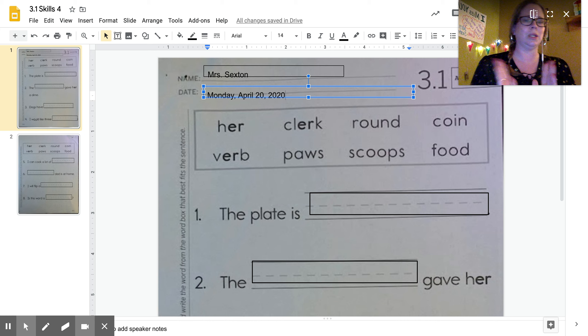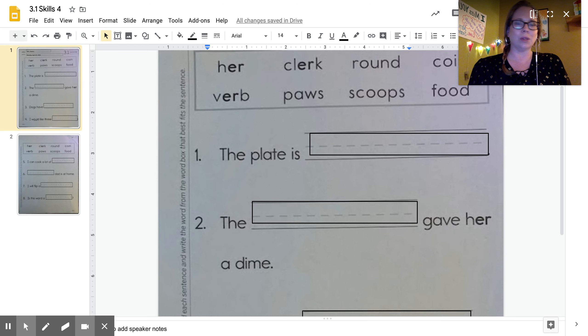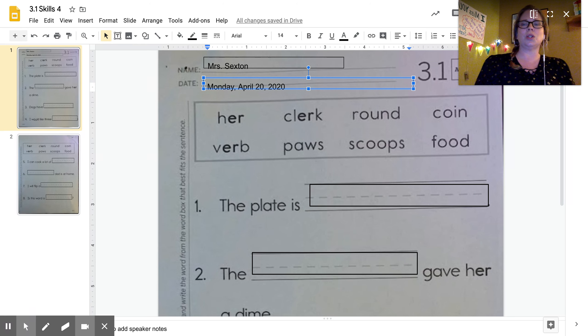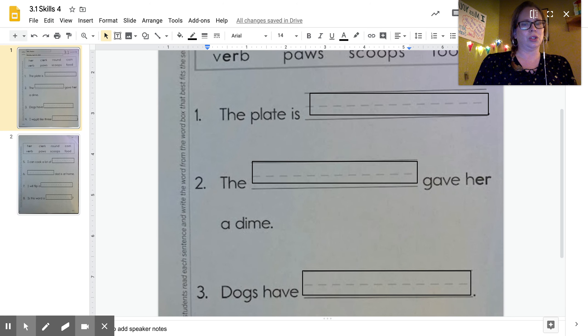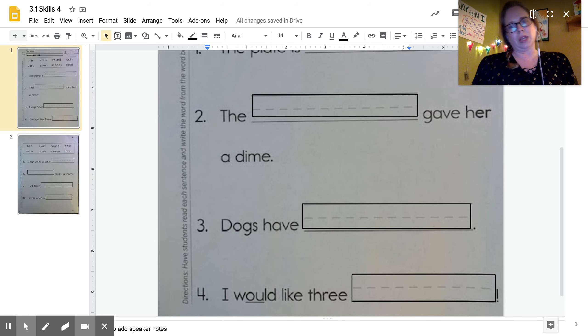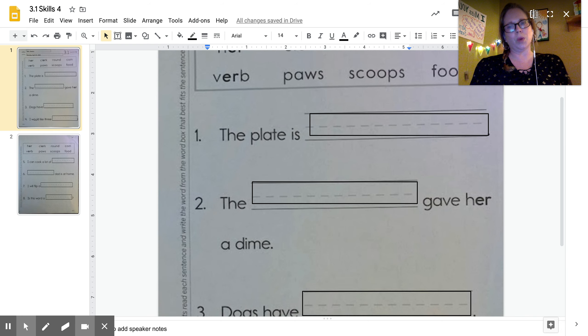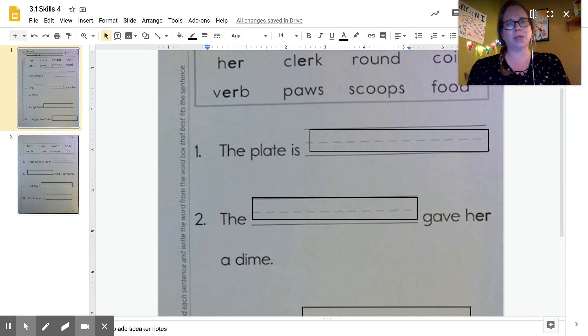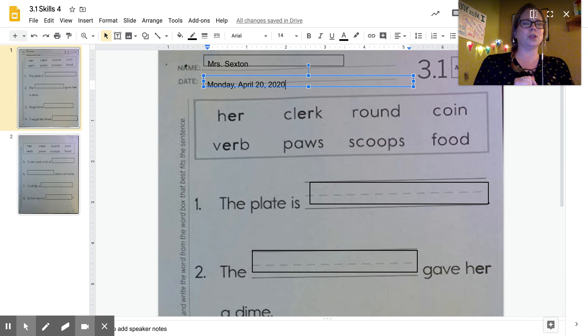Now I can use my cursor arrow keys and go down or use my mouse and scroll down. First thing we're going to do is we're going to look at the directions on the side. And it says have students read each sentence and write the words from the word box that best fits the sentence.